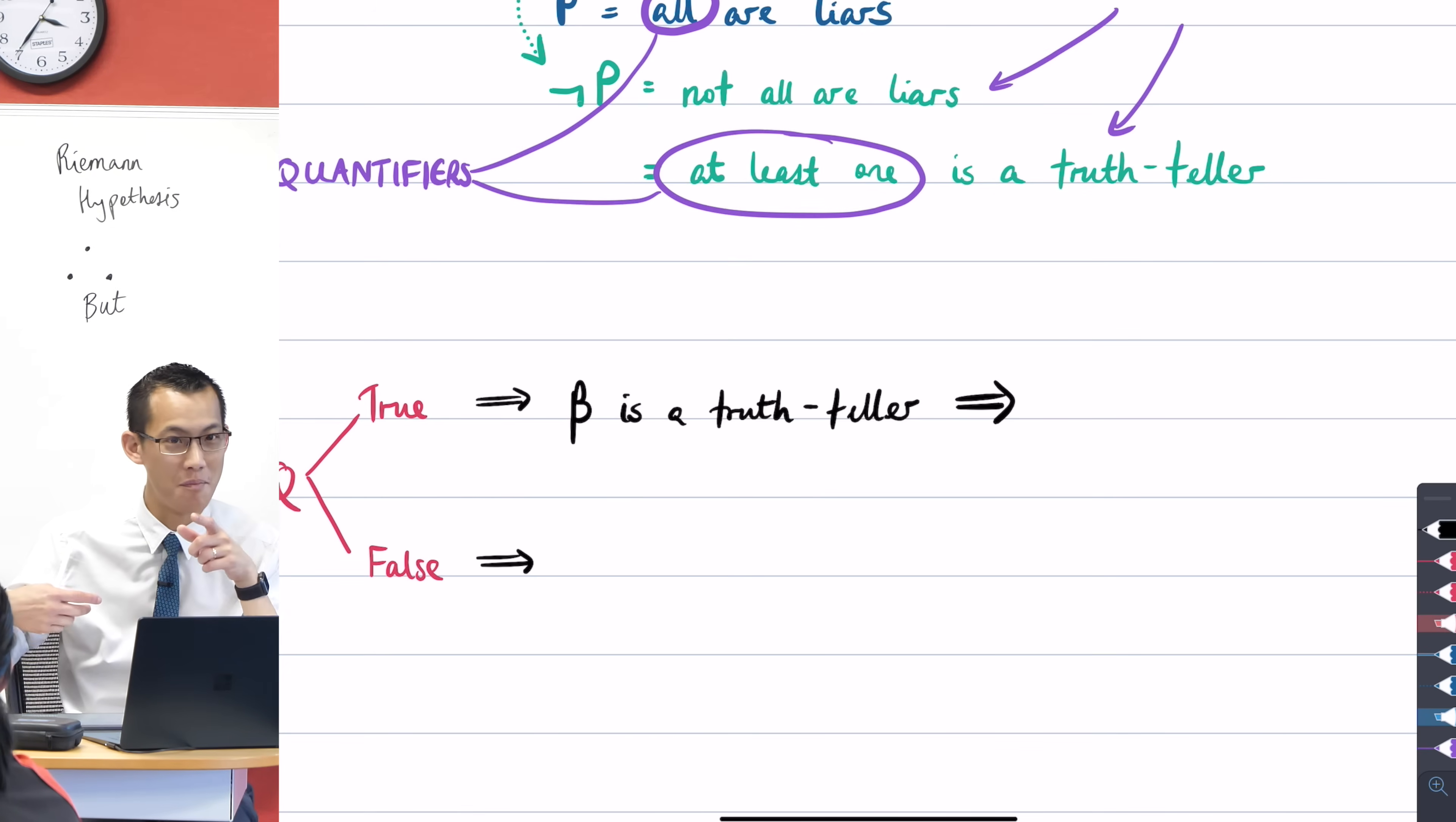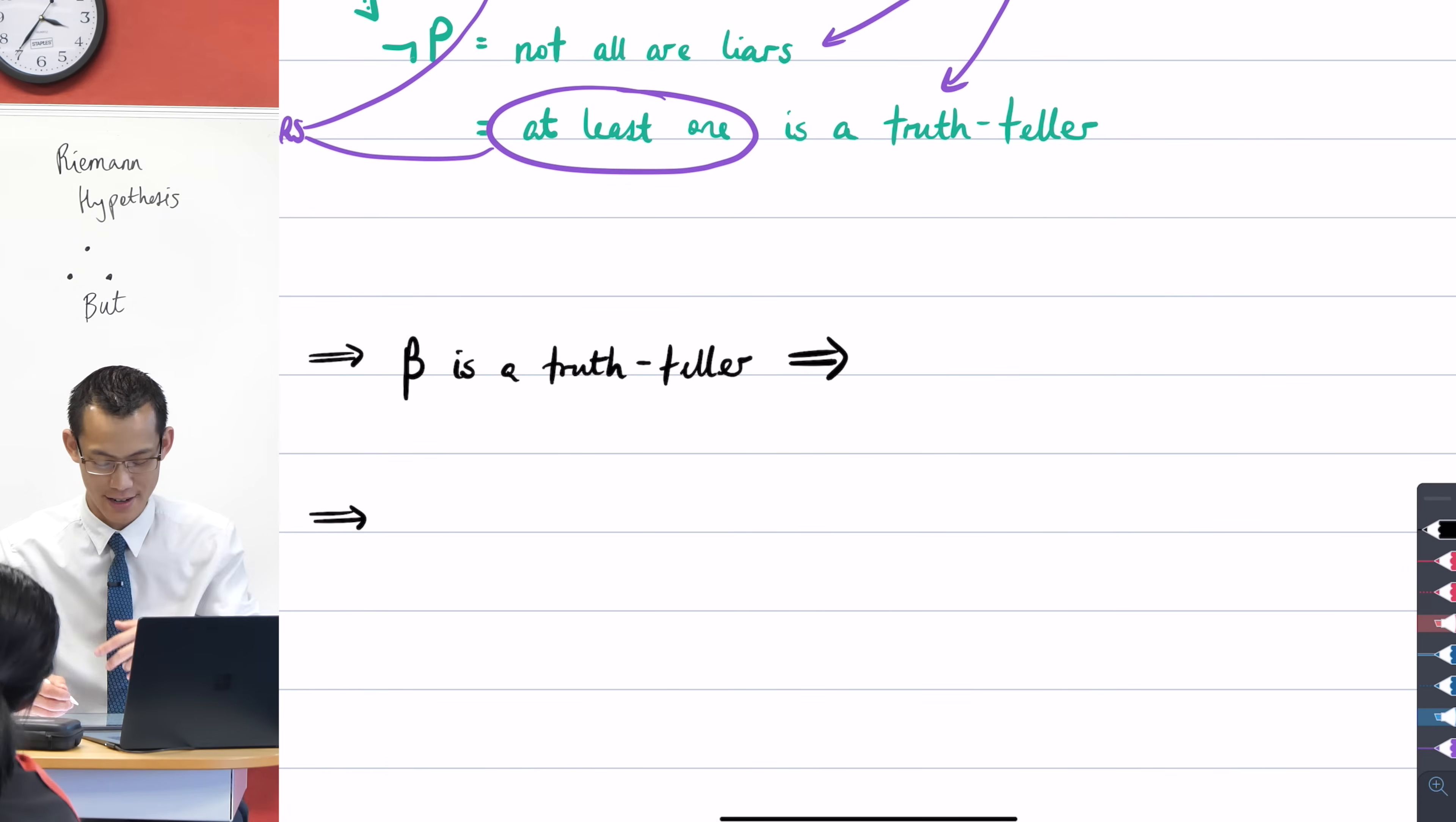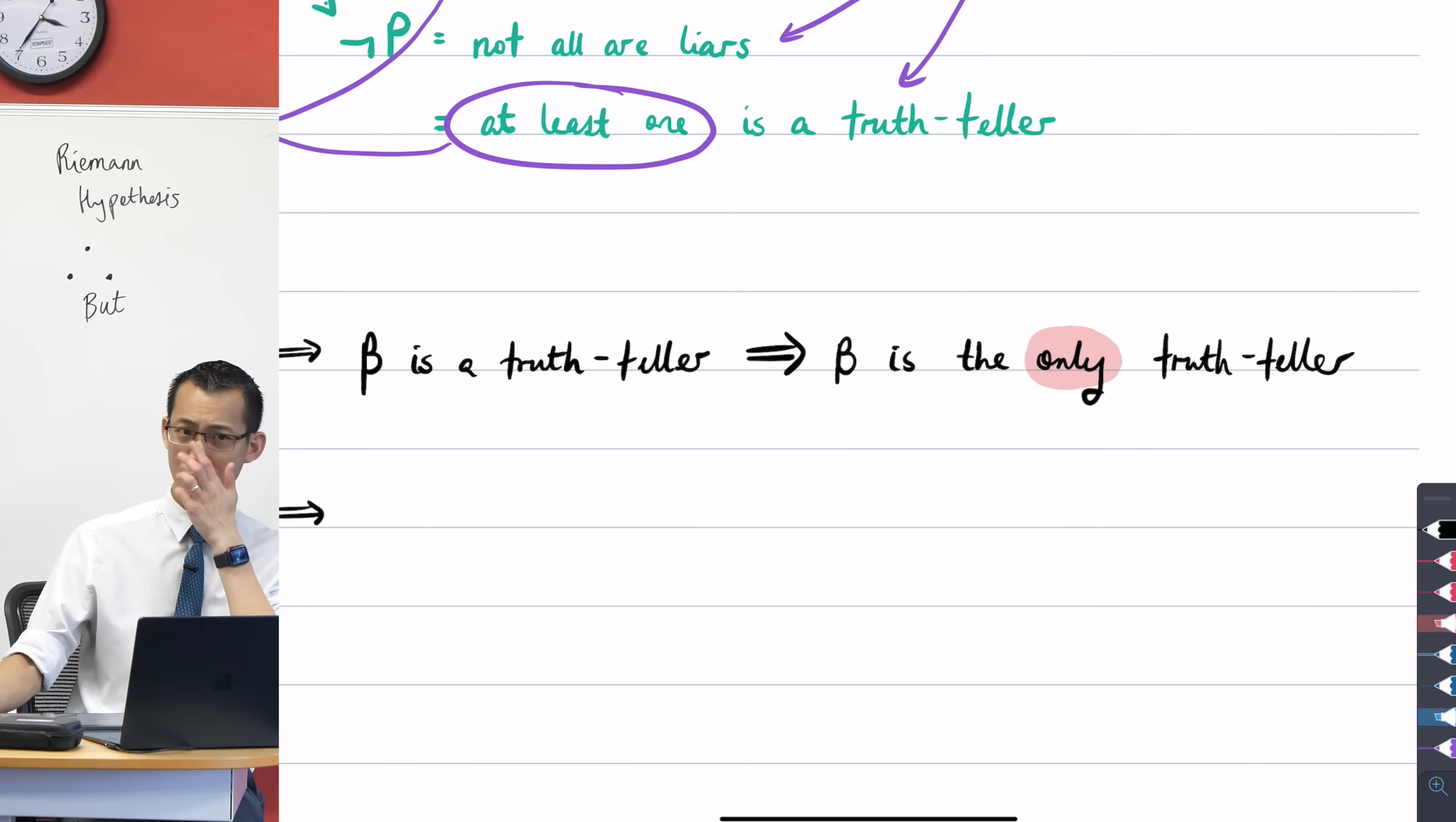Yeah, very good. So this second person beta is the only truth-teller, or that alpha and gamma are not. So I'm going to write it like so. Beta is the only truth-teller. And where I get that from is from the content of statement Q.